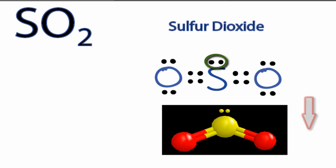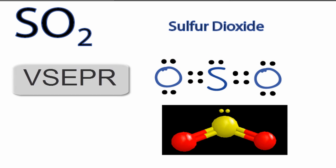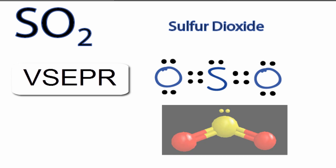That looks like this. In essence, the valence shell electron pairs are repelling each other, giving SO2 its shape.